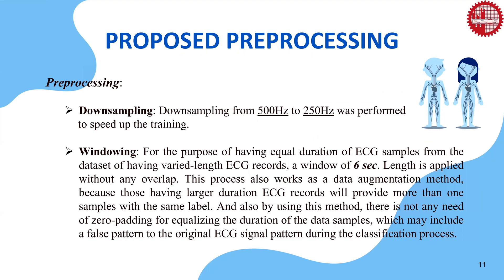In our pre-processing, we also perform the same downsampling method, but to equalize the ECG samples we applied a different approach. In the dataset, the minimum length of an ECG signal is 6 seconds. So we use a 6-second window with no overlapping to equalize the ECG samples for the input of our model. This process also works as a data augmentation method, providing at least one or more ECG samples with the same label as the original ECG record. By doing so, we avoided false recognition of smaller ECG data samples which might have been caused by zero-padding.